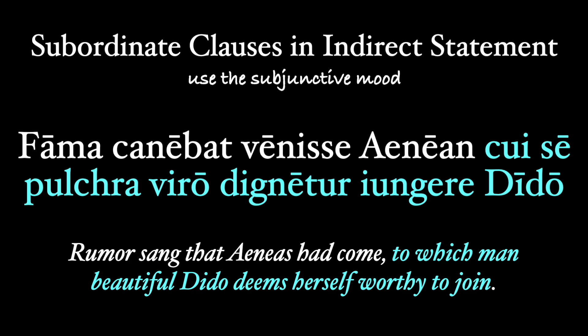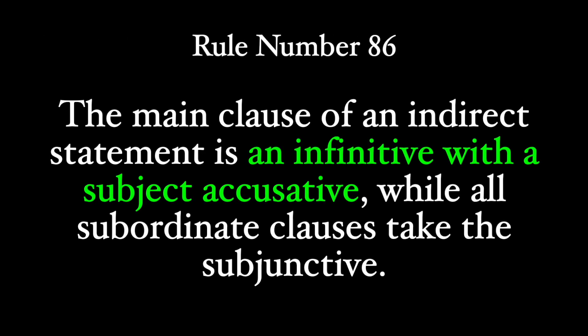As usual, there are exceptions — especially when the subordinate clause identifies a generally accepted truth. But nevertheless, we can stand by Rule 86: the main clause of an indirect statement is an infinitive with a subject accusative, while all subordinate clauses take the subjunctive.